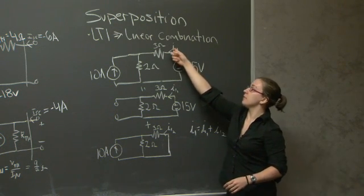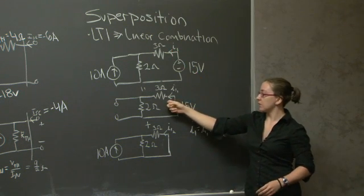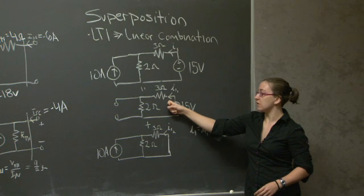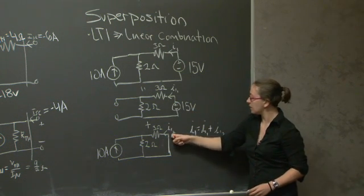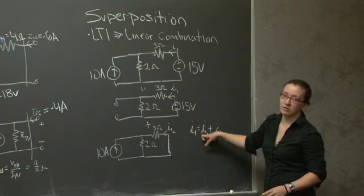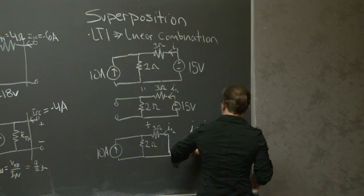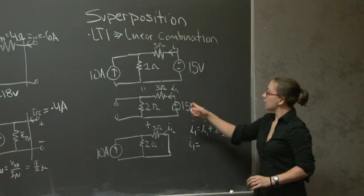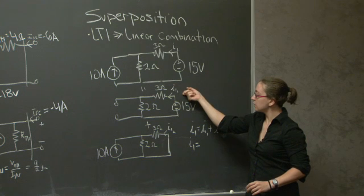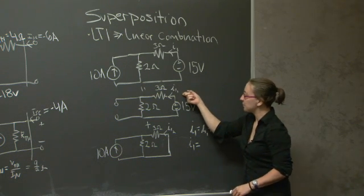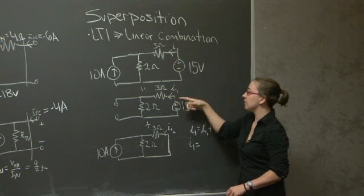If in this example I was just looking for I1, I1 would be the linear combination of the contribution of I1 in this particular circuit, plus I1 in this particular circuit. So this is the expression that I'm looking for. In the first circuit, I'm just going to use V over IR, or V equals IR. And I'm going to have three amperes in this direction.